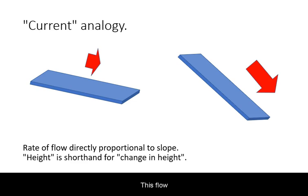This flow will be modified by voltage and resistance. Voltage is analogous to the slope that a current flows down.